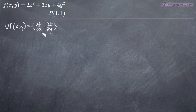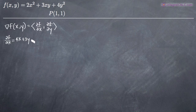Let's find both partial derivatives. For the partial derivative of f with respect to x, we treat x as the variable and hold y constant, then differentiate term by term. The derivative of 2x² is 4x. The derivative of 3xy is 3y, because the derivative of x is 1, giving 1 times 3y. The derivative of 4y² is 0 because there is no x variable in that term.